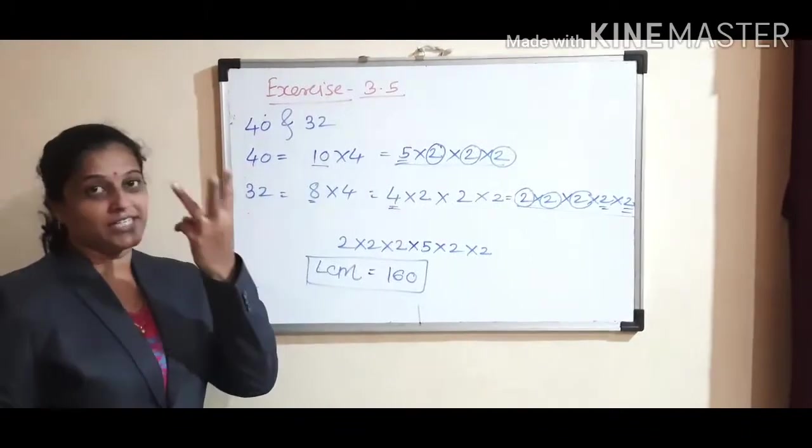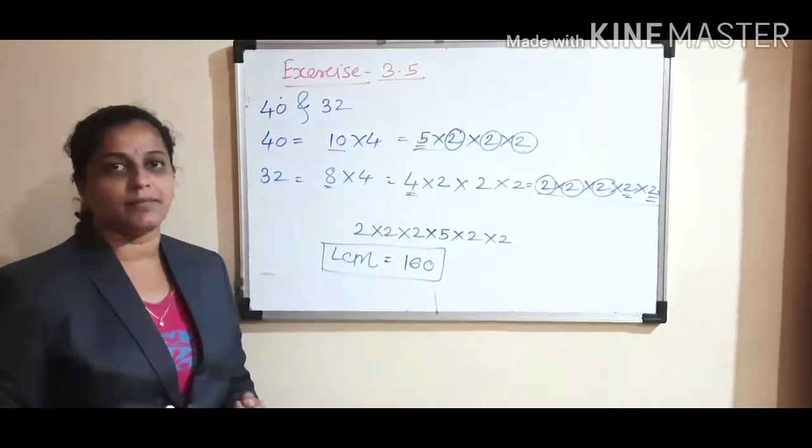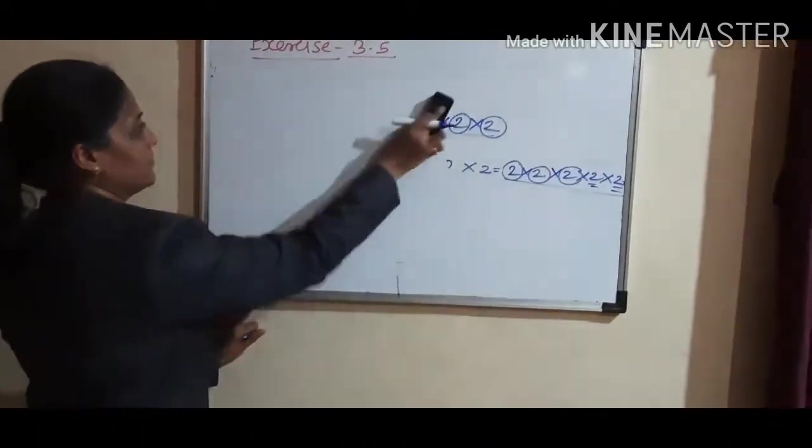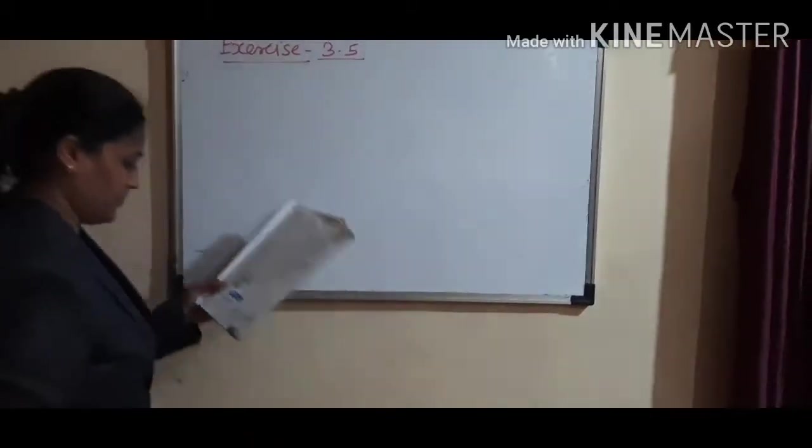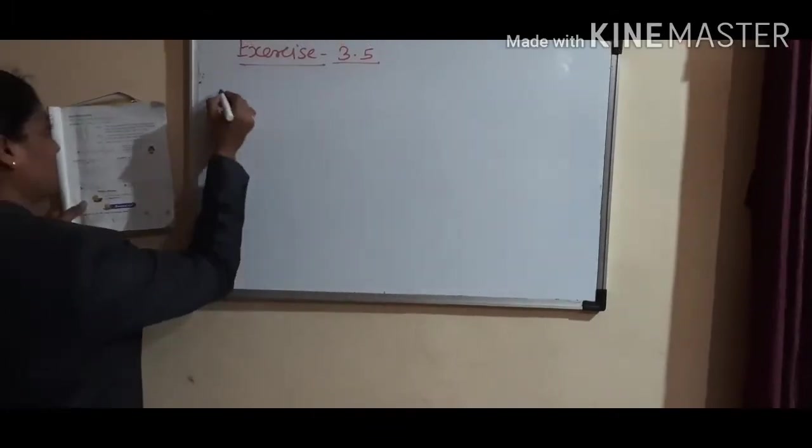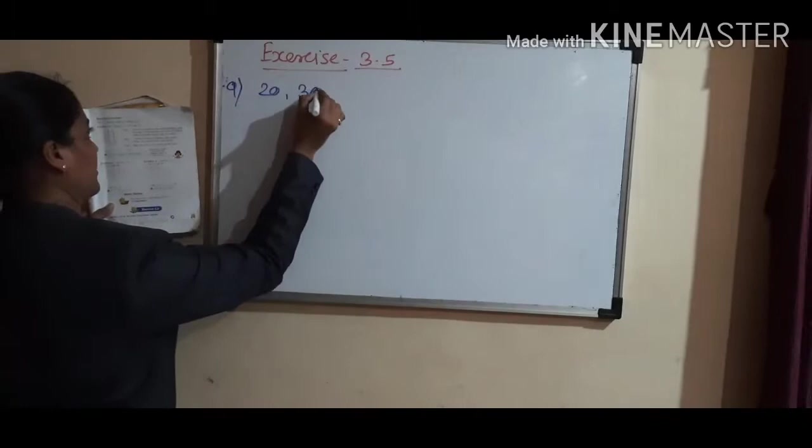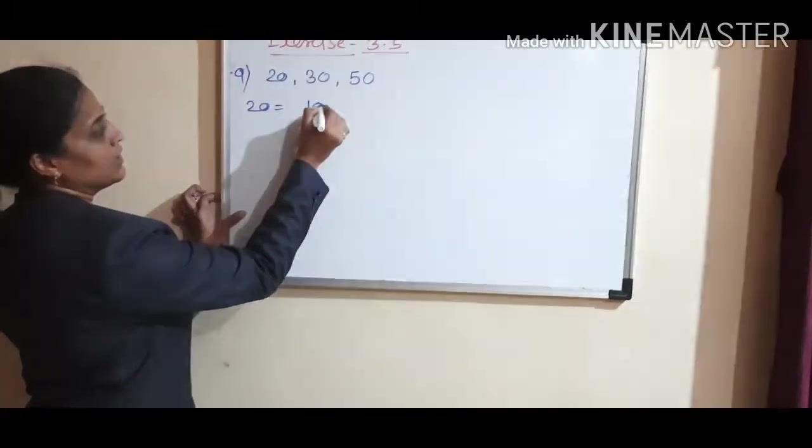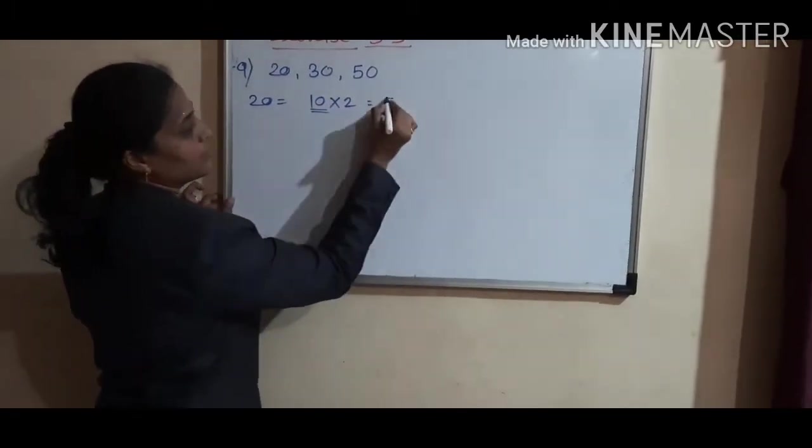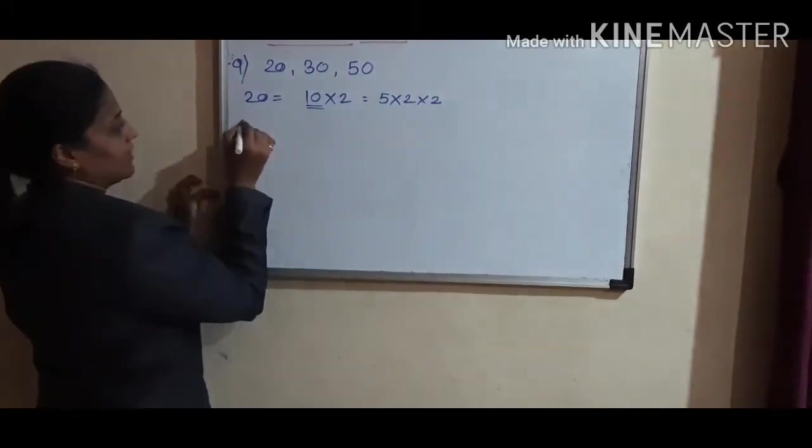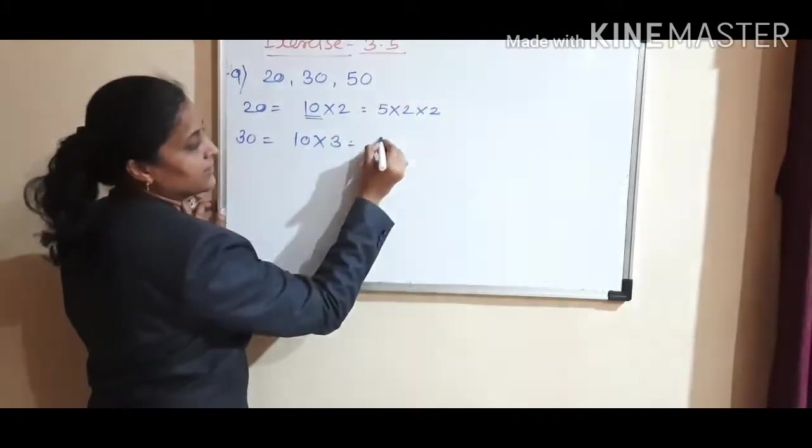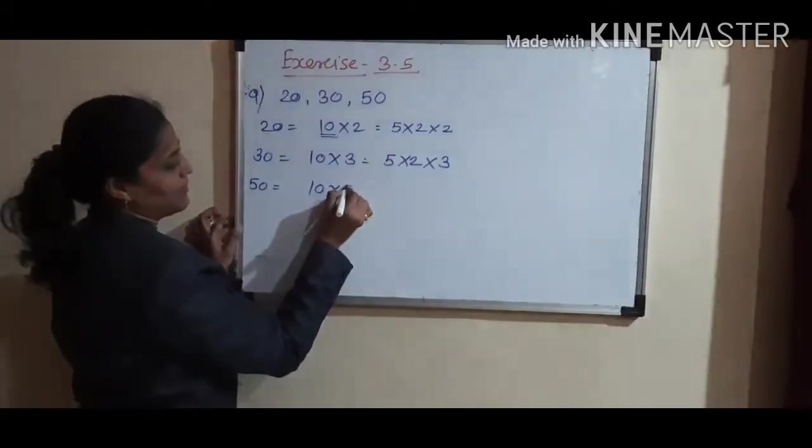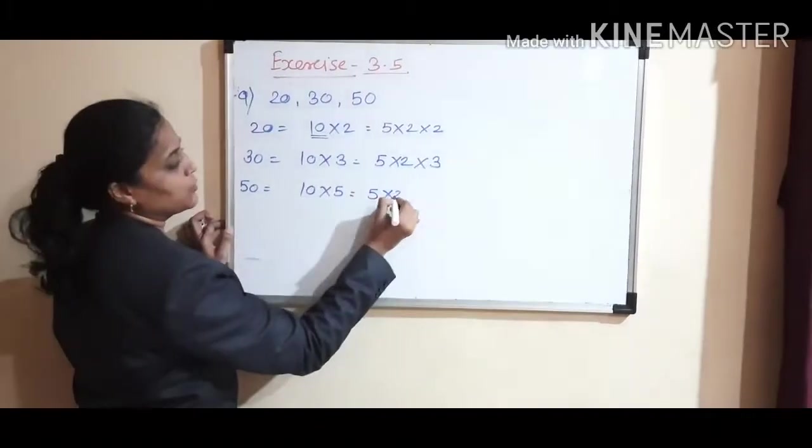Now there are three numbers, and we want to find their LCM: 20, 30, and 50. 20 equals 10 times 2, which is 5 times 2 times 2. 30 equals 10 times 3, which is 5 times 2 times 3. 50 equals 10 times 5, which is 5 times 2 times 5.